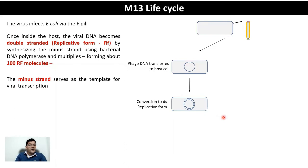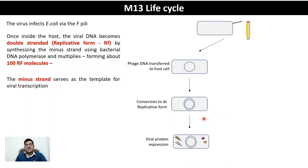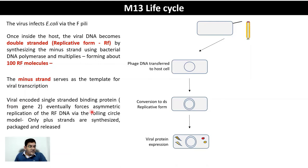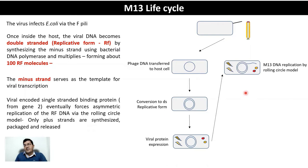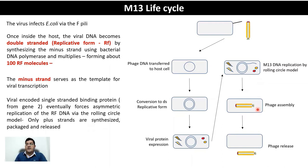The minus strand serves as template for viral transcription, and viral proteins are expressed. All 10 genes are essential for viral replication and packaging. Once viral proteins are expressed, the virus enters the next phase where it synthesizes single-stranded DNA for packaging into fresh viral particles. Viral-encoded single-stranded binding proteins from gene 2 force asymmetric DNA replication of the replicative form via the rolling-circle model, producing only plus strands, which are packaged and released as new M13 particles. The host cell is not lysed.